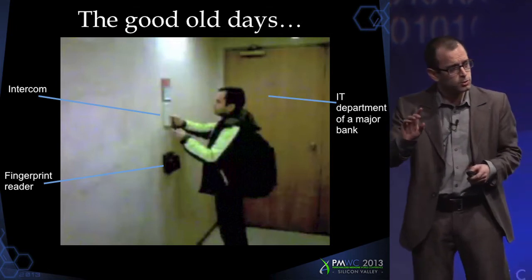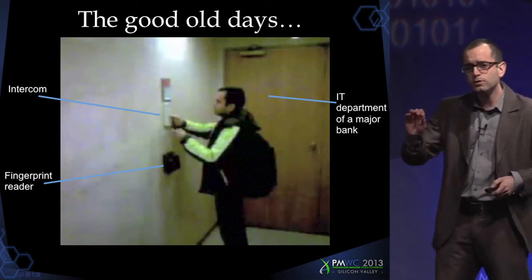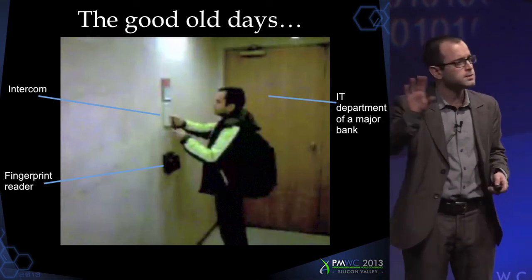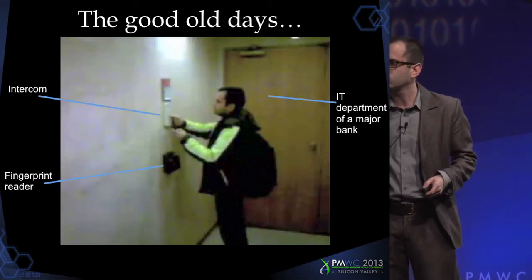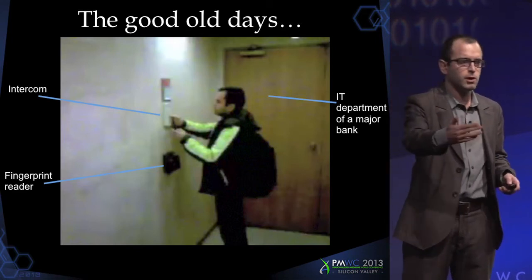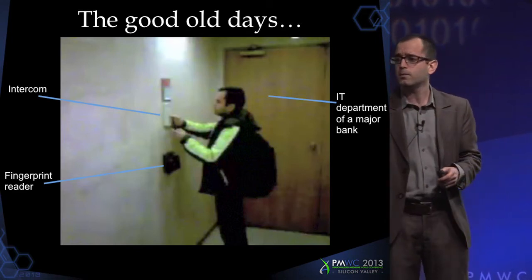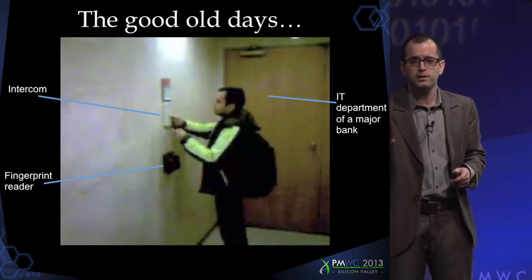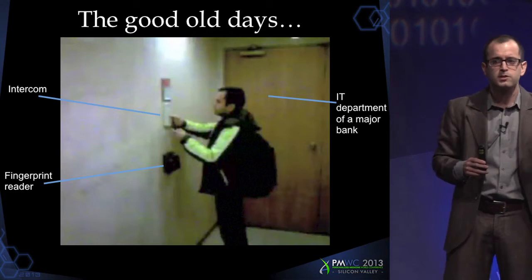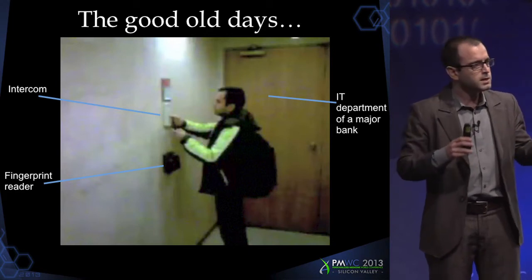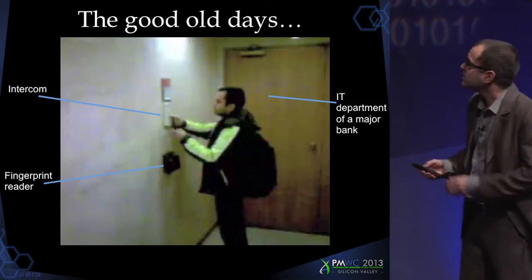One of my favorite hacks: this is the door to the IT department of a major bank in Israel. The door is controlled by a fingerprint reader, but also by an intercom. You press the button, it calls the secretary, and if she knows you, she presses 8, the relay opens, and you can enter. It's currently 10 p.m. — there's no secretary in the building. I'm going to show you that each of you can open this door in five seconds using your own cell phone by playing the tone '8.'